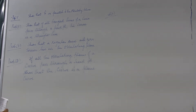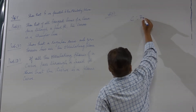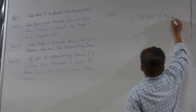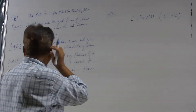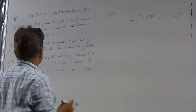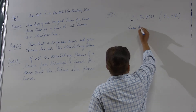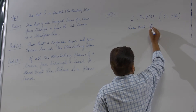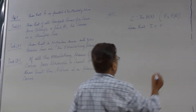I can move on to number 7. A regular curve with zero torsion lies in the osculating plane. So, I have a curve C, which is r = r(s) in the natural parameter, and in the generalized parameter its equation is r = r(t). This curve is such that its torsion is zero, so τ = 0 for the curve C.